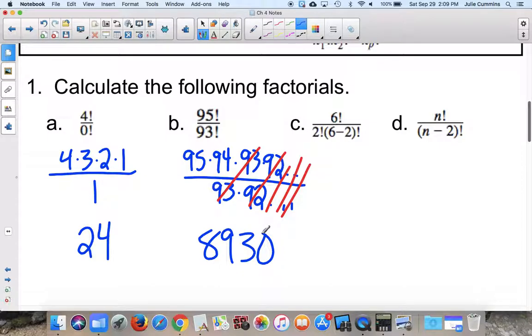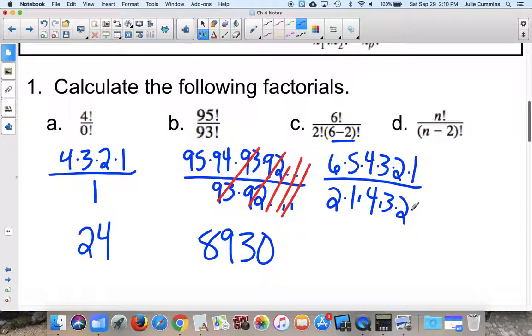On the next one, we have 6 factorial over 2 factorial times 4 factorial. Now, we could actually do all this math out. Let me show you something else interesting. The 6 factorial is going to be 6 times 5 times 4 times 3 times 2 times 1. We have 2 factorial, which is 2 times 1, and then 4 factorial, which is 4 times 3 times 2 times 1. And again, we have some stuff canceling. The 4s, the 3s, the 2s, the 1s. So we end up with 30 divided by 2, which is 15.